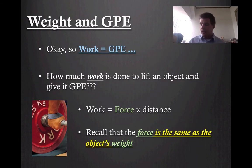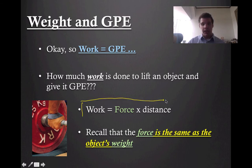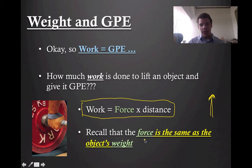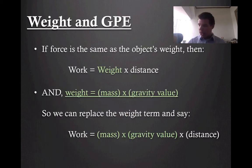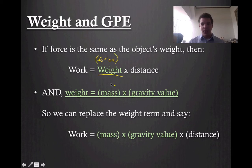So if work equals GPE, let's think about how much work is done to actually lift an object and give it that GPE. Well, the work equation we've used in the past is just that work is force times distance. Remember what we said when we're lifting an object up into the air — the force we apply is the same as the weight. So instead of writing work is force times distance, since we're talking about lifting an object straight up into the air, we can say that work is going to be the weight times the distance, because the weight and the force are the same thing.